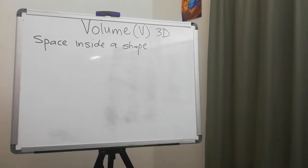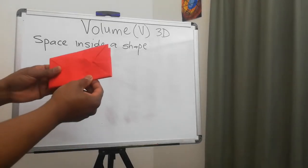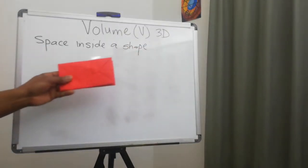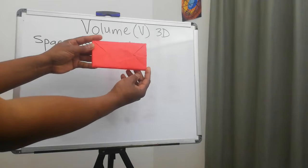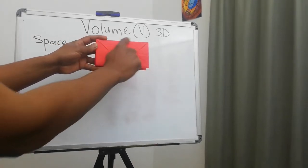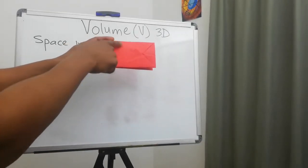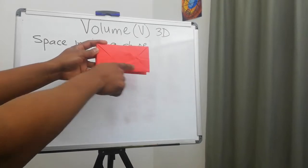Okay, so now let's talk about volume. Volume is the space inside a shape. However, when you look at volume, let's have a look at this shape. This is a rectangle and this part of the rectangle is called our area.